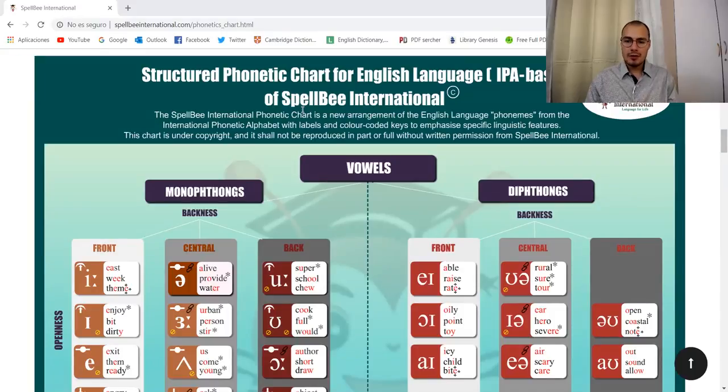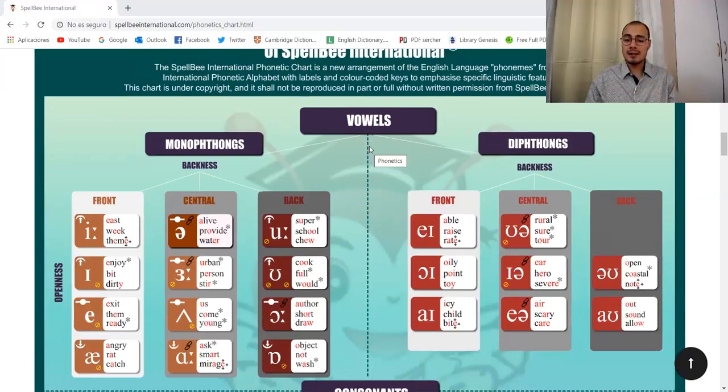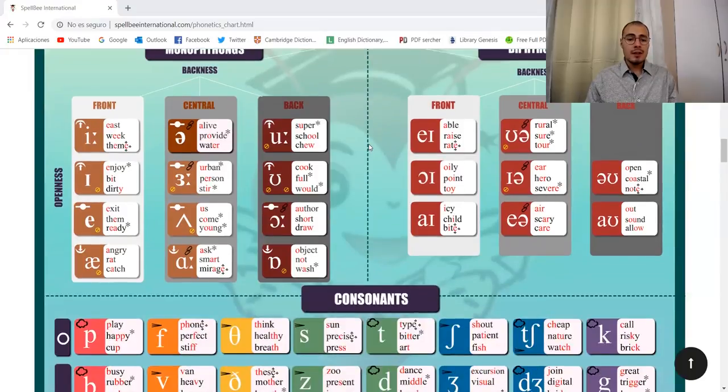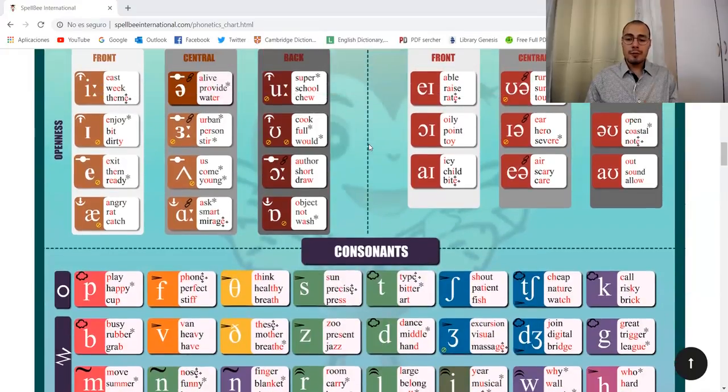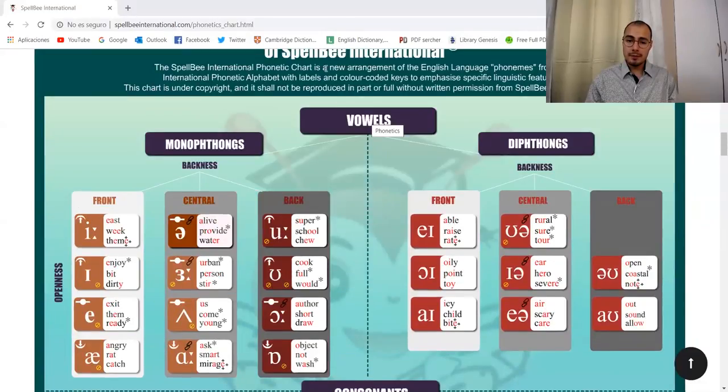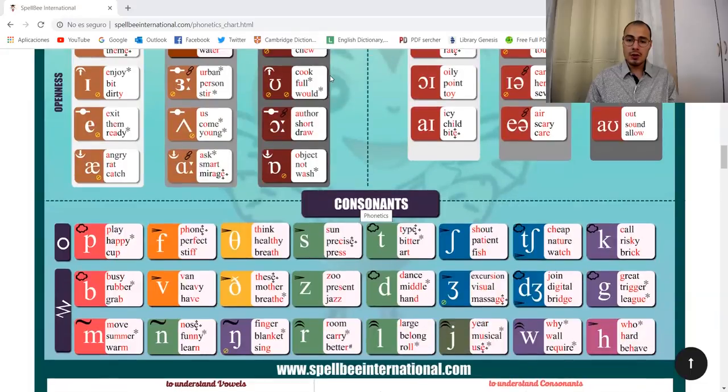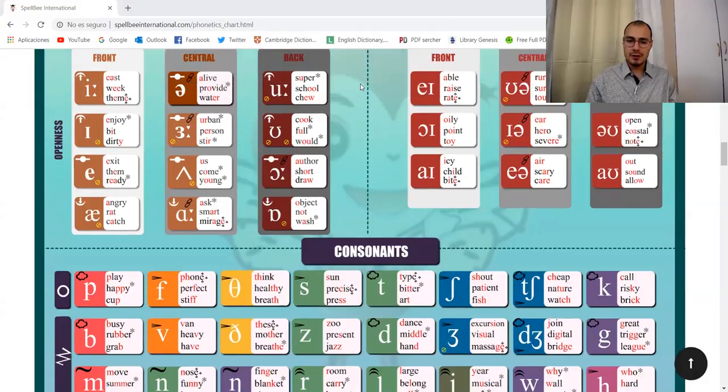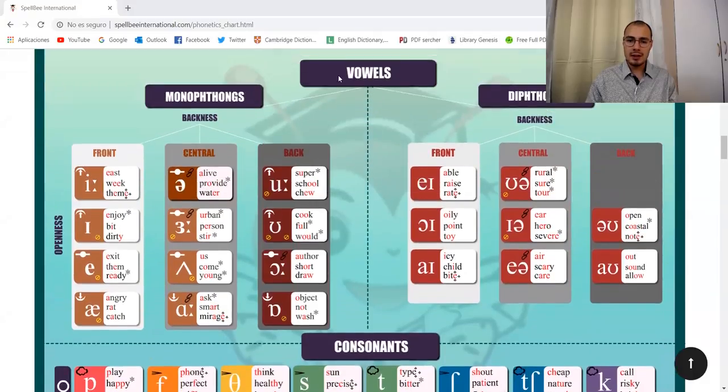Structured phonetic chart for English language based on IPA. As I explained, IPA is for all the languages and we are using this as a scientific approach. We have 44 sounds of English language here. It is divided in vowels and consonants. You will have many features on this chart. I will just give a rush and show you where they are.